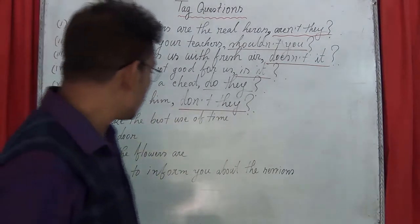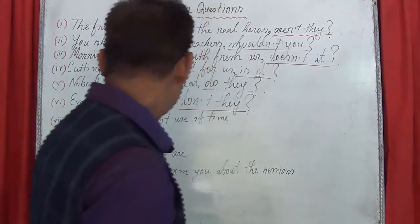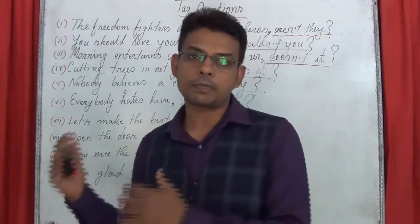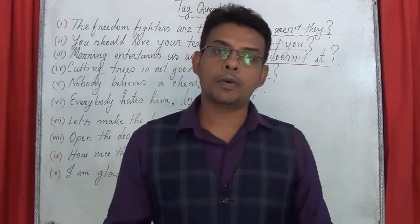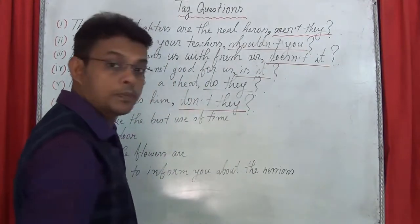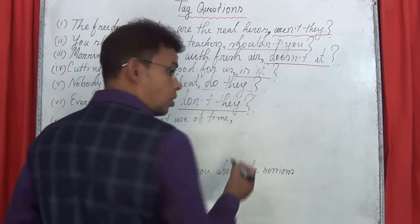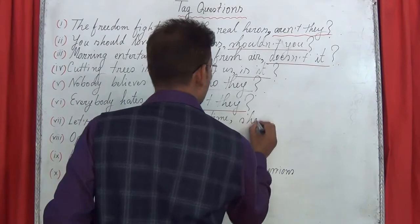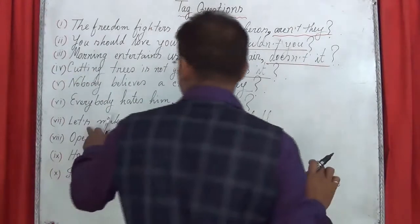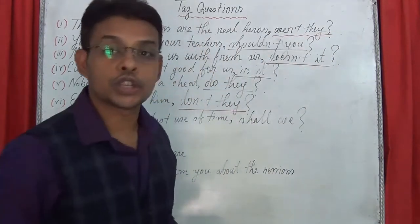Next: 'Let's make the best use of time.' It is an imperative sentence. If you think the statement has 'let' followed by the object 'us,' you have to use 'shall.' First, add a comma, then 'shall.' No need for a negative form here. The object is 'us,' and the subject pronoun is 'we.' So the correct answer is: 'shall we?'